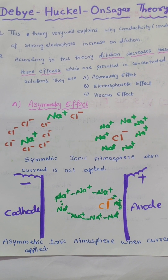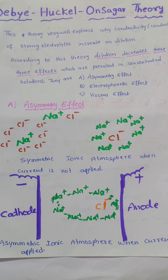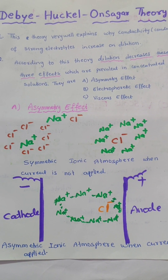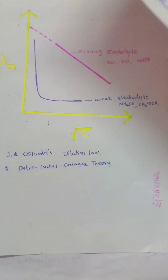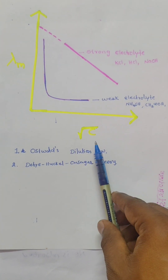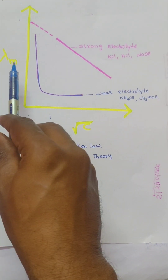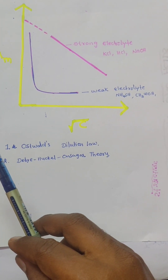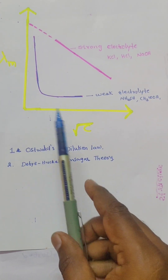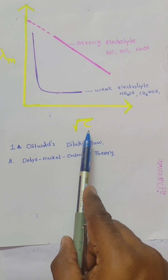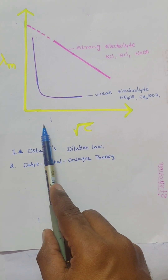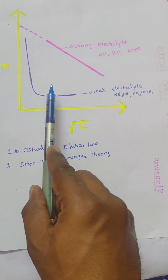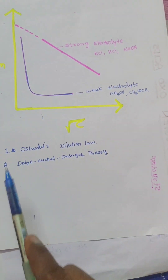Hello, dear students. In this video we are going to learn about the Debye-Hückel-Onsager theory. To understand it, first we need to know how the concentration of a solution affects the molar conductivity, lambda M. Instead of lambda M we can also use the equivalent conductance, lambda E. On dilution — that means on decreasing the concentration — the lambda M value of both strong and weak electrolytes increases.